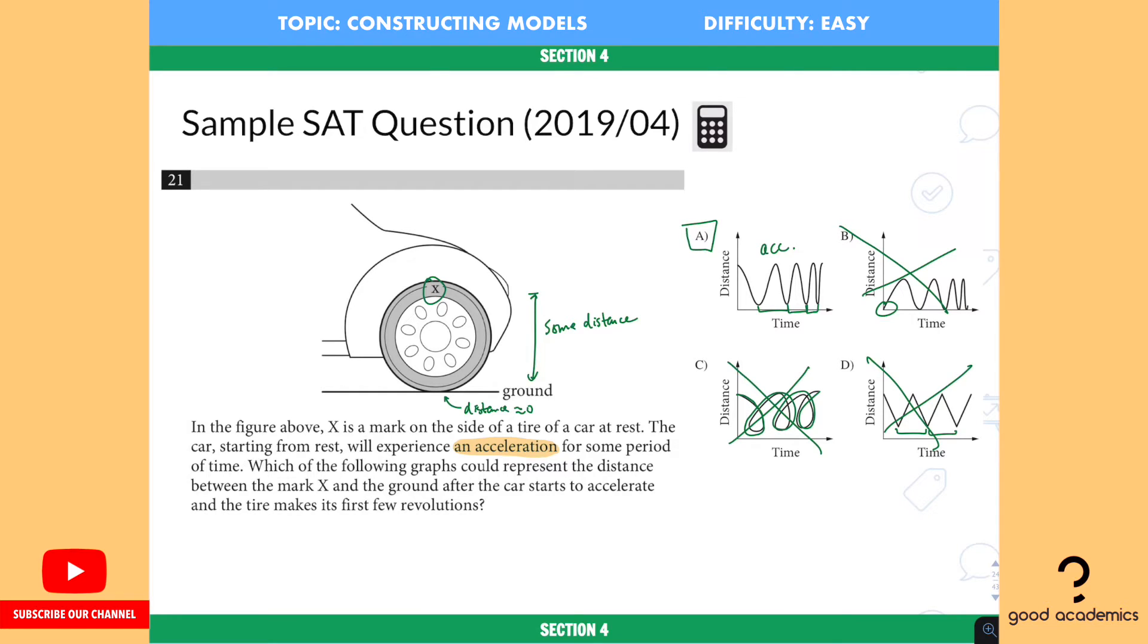So what we go over here is that we want to use some simple strategies to pick out our graph. And you need to pay attention to the details such as the wording, such as the marking of the tire, which is above the ground, way above the ground. So it must start from some non-zero value and it should start at the highest point, not the lowest point.